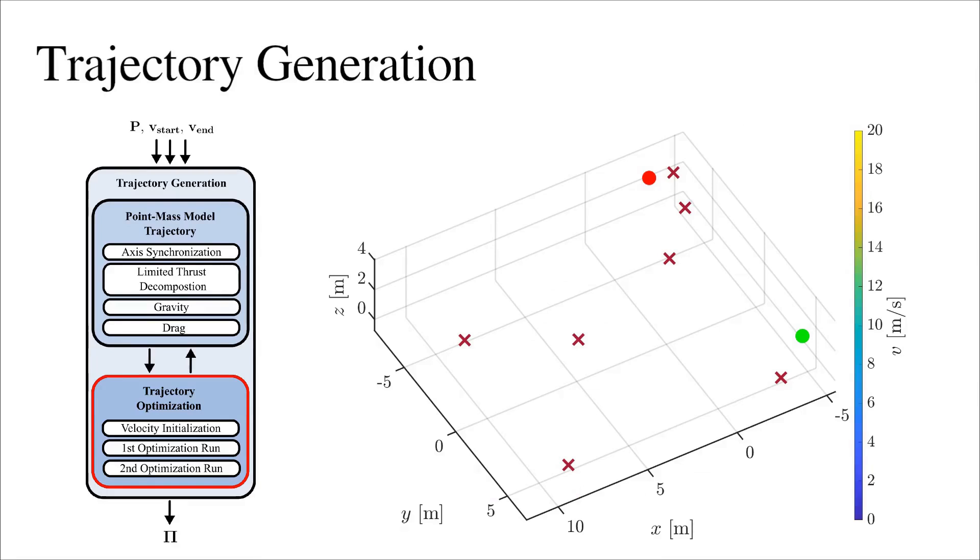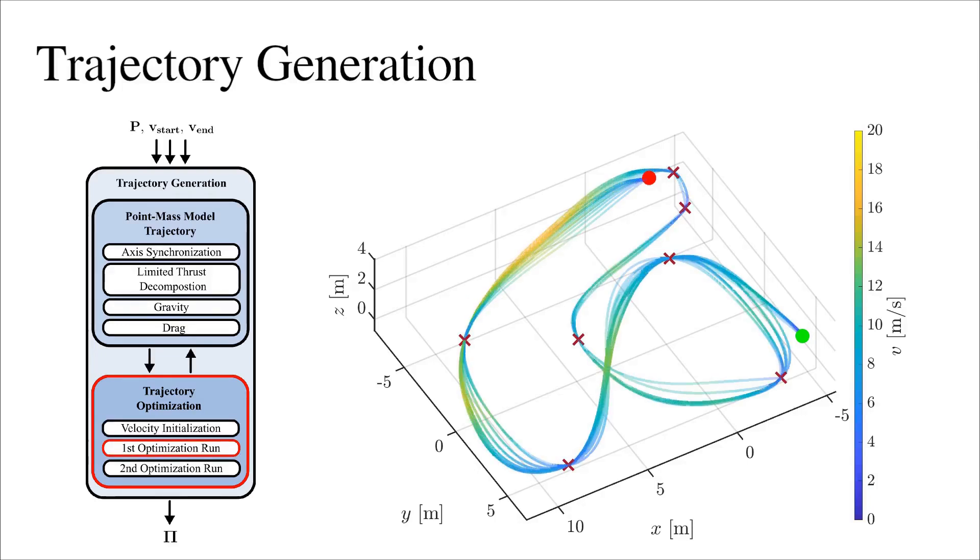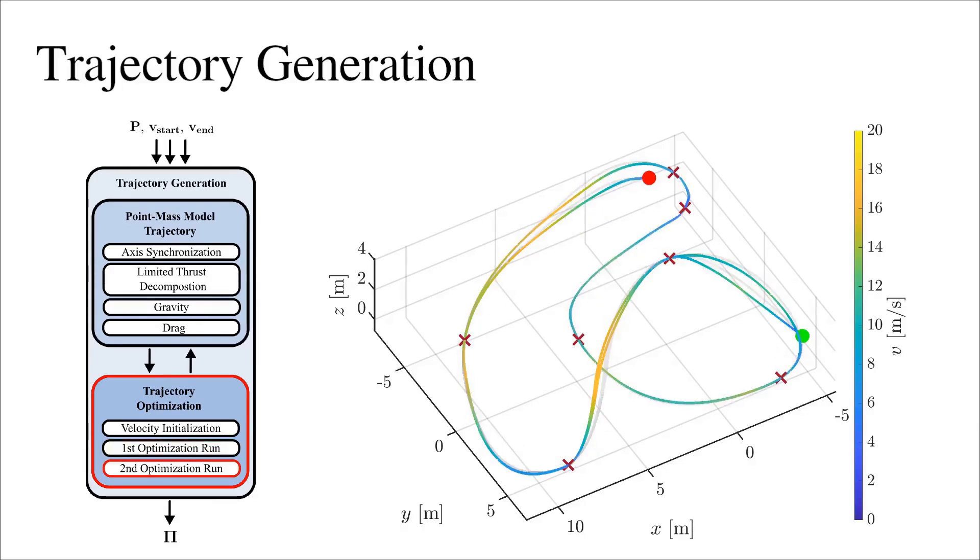For a given case, the entire trajectory generation pipeline proceeds as follows. We first initialize the velocities in the via-waypoints according to the positions of neighboring waypoints. The trajectory is then optimized with fixed per-axis limits to avoid getting stuck in local minima. Next, the trajectory is recomputed using the limited thrust decomposition method, and the optimization process is run again with the limited thrust decomposition to obtain the fastest possible trajectory.